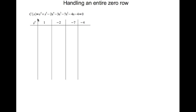We write down the row for s^6. This is the coefficient of s^6, skip one power of s, this is the coefficient of s^4, skip one power of s, this is the coefficient of s^2, skip one power of s, and this is the constant term.